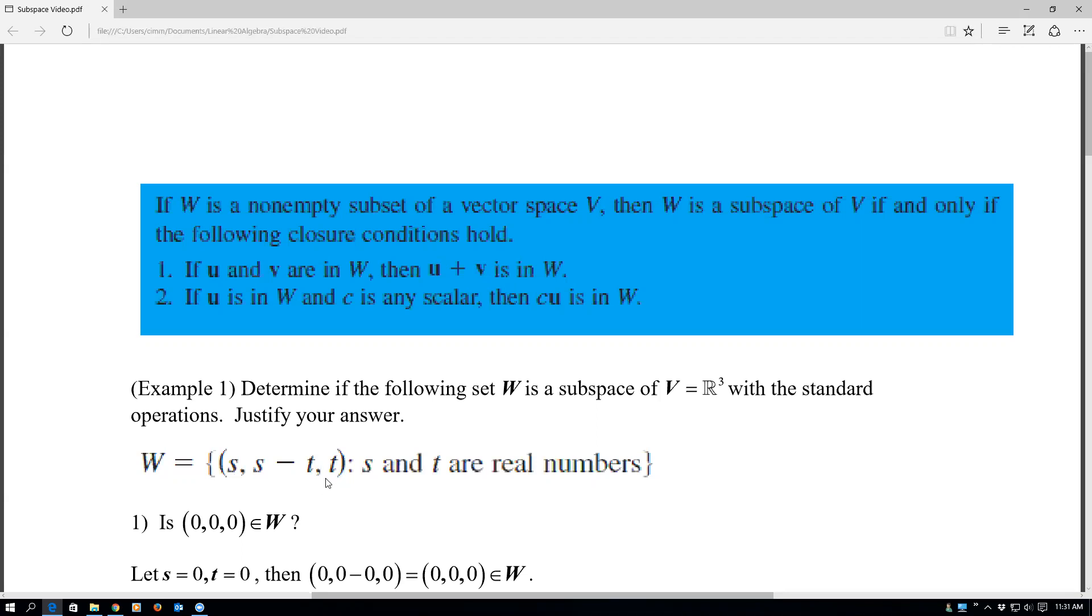Sometimes it's easy to prove something isn't a subspace if we look at the zero vector and it's not in there. So that's sort of the question I asked first. So is (0, 0, 0) in W?